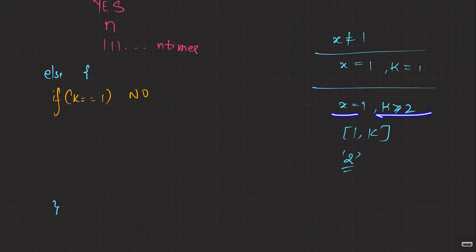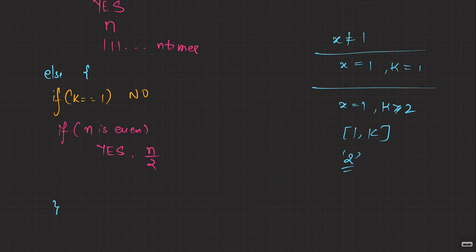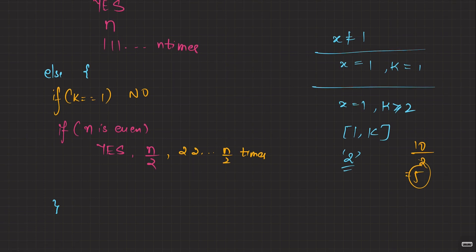This is how you actually approach a CP question - figure out the cases and focus on each. We're now focused on: 1 is forbidden and k ≥ 2. I always have 2 at my disposal, so I can always make even elements. If n is even, you can always make it - how many elements? n/2 times. So for n=10, pick 2 five times. Just print 2, n/2 times.